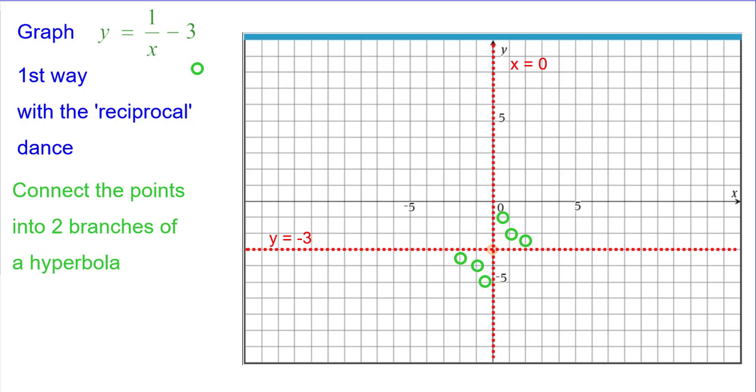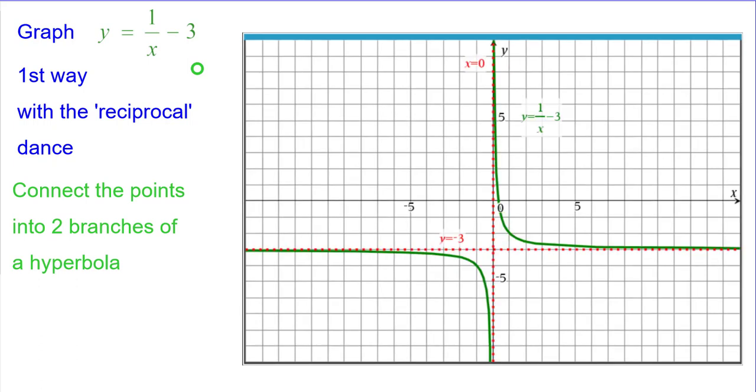And now that we have those, we're going to connect those points with the two branches of a hyperbola to fit in with those asymptotes. And it looks like that.